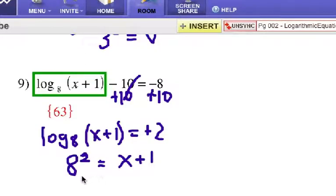That's going to be 64 equals x plus one. And, yep, we're going to subtract one on each side, and that should give us 63.